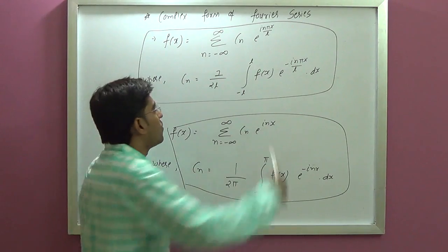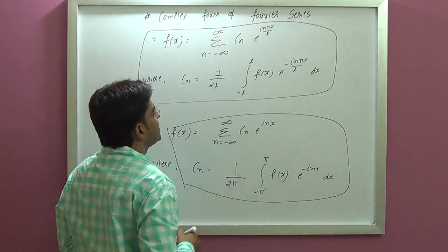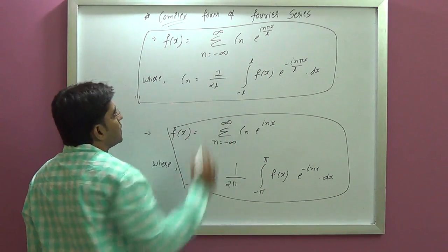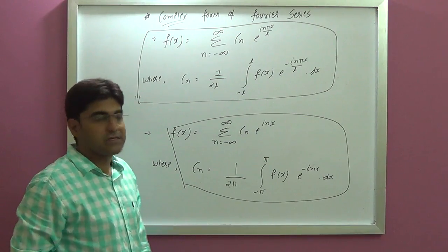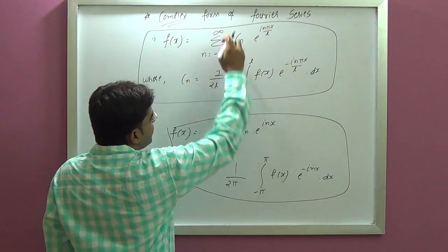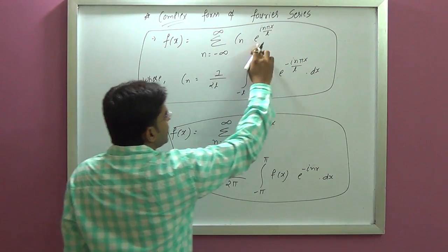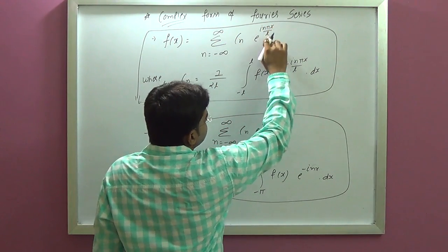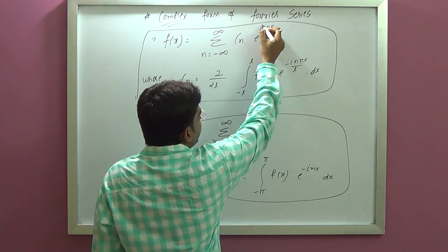Now our next point is complex Fourier series. For a class you have to express f of x where our sum is from n equals minus infinity to infinity, cn e raise to i n pi x by l.